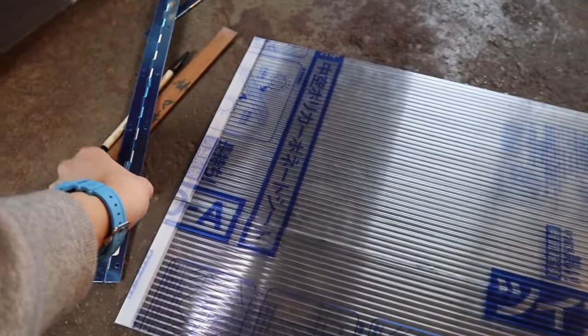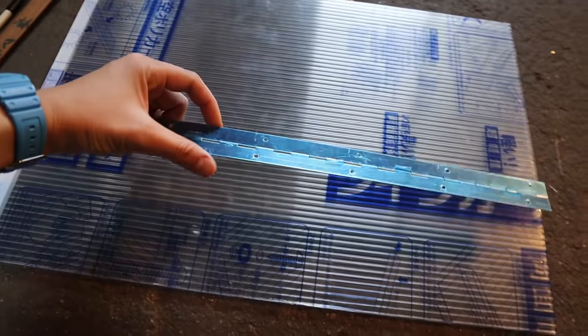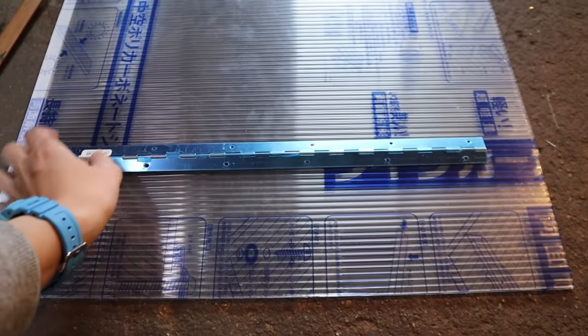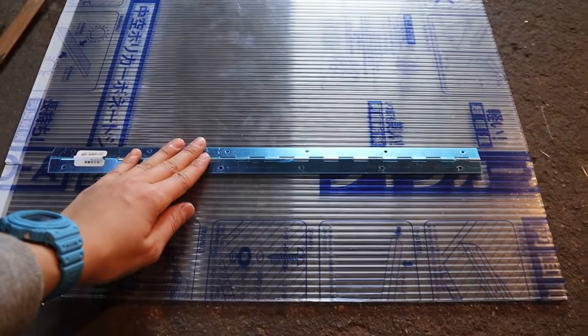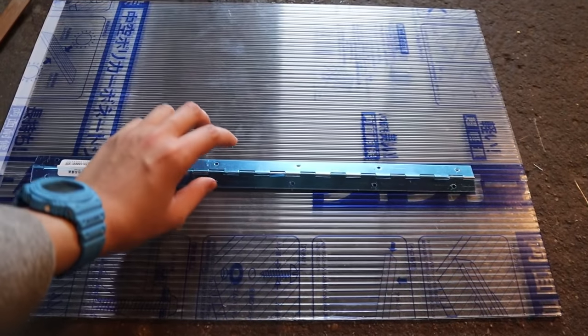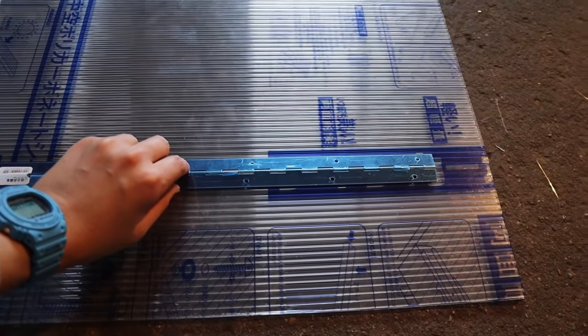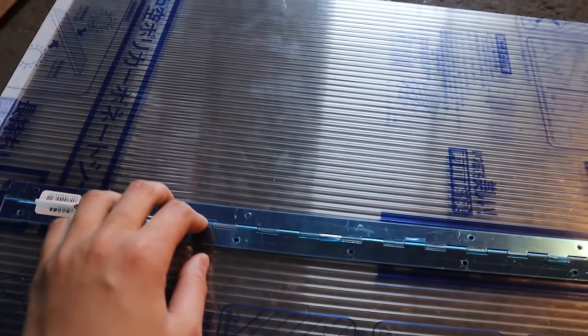So once you've got your board cut out like this, you want to get your hinge. I like to use this hinge. This is stainless steel, but you don't have to use this. If you can't find this, you can use whatever you have that's available to you. You just got to find a way to attach it onto your board.